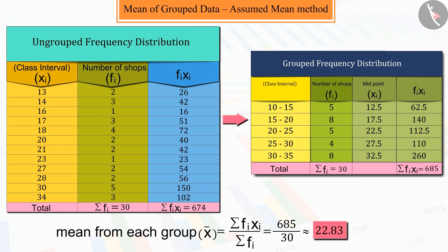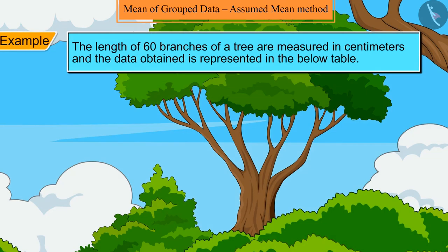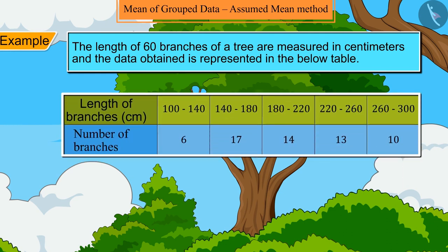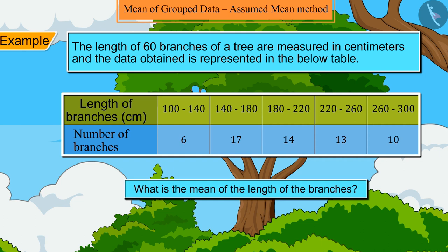Let's try to understand it with the help of an example. The length of 60 branches of a tree are measured in centimeters, and the data obtained is represented in the table below. What is the mean of the lengths of the branches?